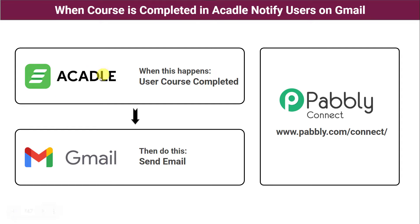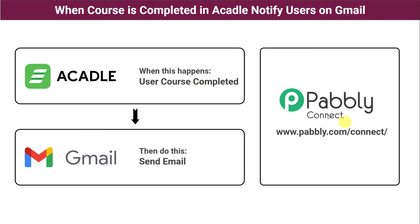In order to create an integration between Acadle and Gmail we are going to use a software application named Pabbly Connect. Pabbly Connect is an automation and integration software which will help us in integrating both these applications automatically. The best part is it doesn't require any coding skills or programming knowledge — even a non-technical person can use it very easily.